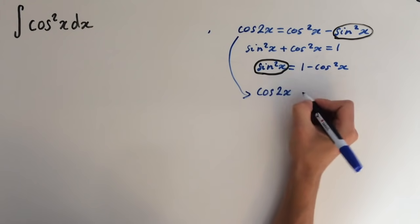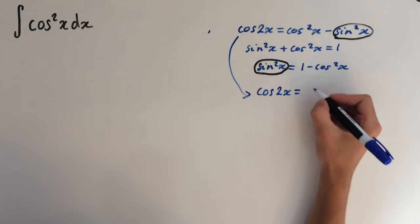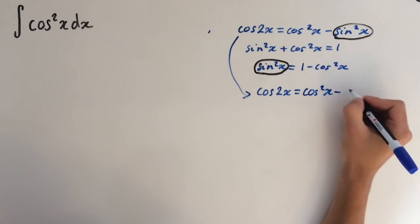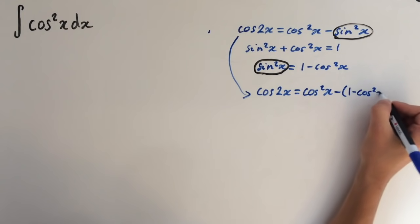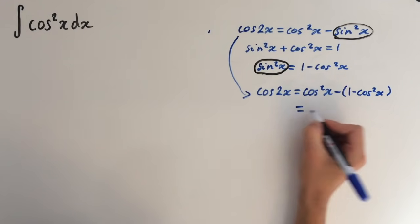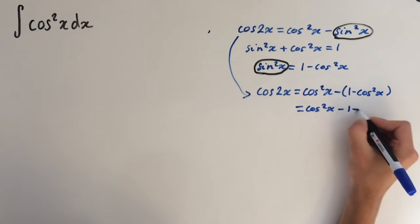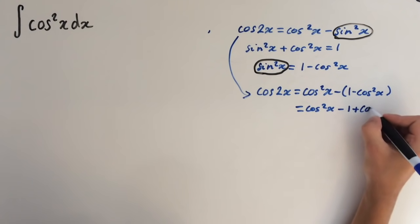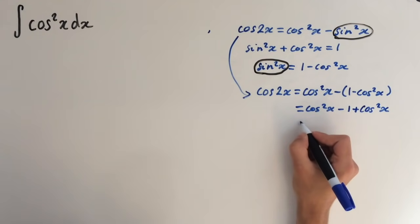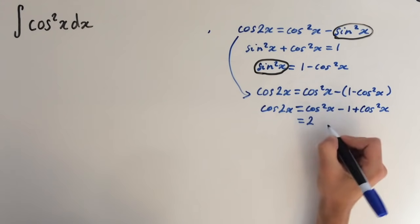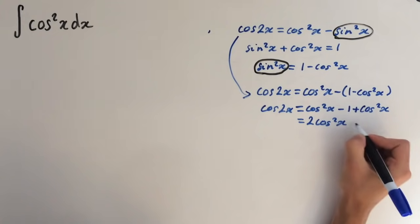Cosine of 2x equals cosine squared of x minus 1 minus cosine squared of x. So let's expand this out. Cosine squared of x minus 1 plus, because it's double negative, plus cosine squared of x. So this equals 2 cosine squared of x minus 1.